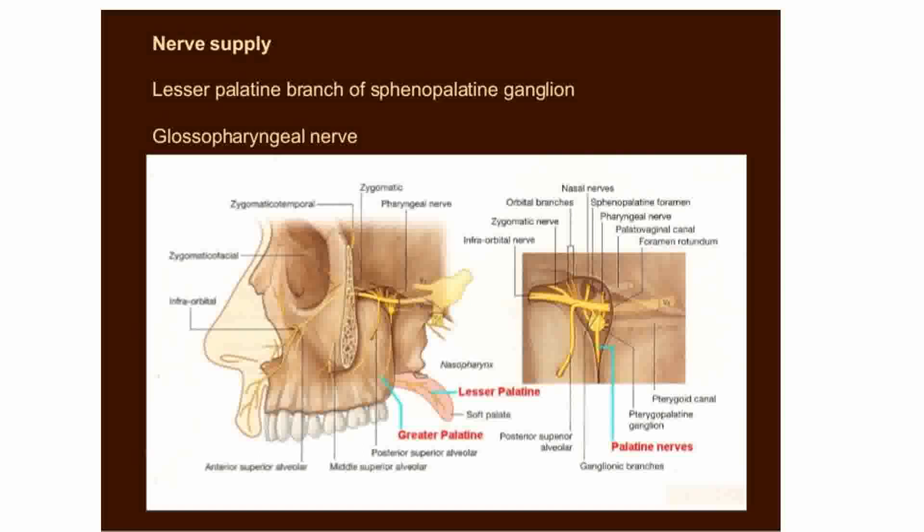Next is the nerve supply of the tonsil. The nerves supplying the tonsil are the glossopharyngeal nerve and the lesser palatine nerve, which is a branch of the sphenopalatine ganglion. The sphenopalatine ganglion is located in the sphenopalatine foramen, and from the ganglion you can see the lesser palatine branches going to supply the tonsil. These are the two nerves supplying the tonsil.